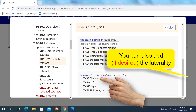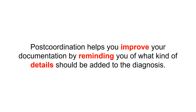You can also, if you scroll down, add laterality. This is optional and it says 'use additional code if desired.' In this case, we do want to use it because we know it's bilateral diabetic cataract. Post-coordination helps you improve your documentation by reminding you of what kind of detail should be added to the diagnosis — many times you forget to add whether the diagnosis was left or right, whether it was acute or chronic, or the cause of a certain injury like a road traffic accident or a fall.